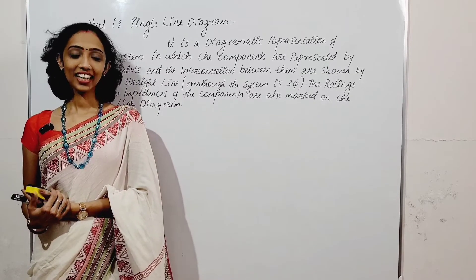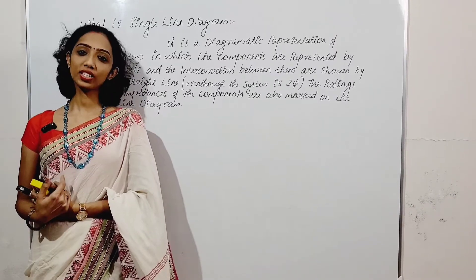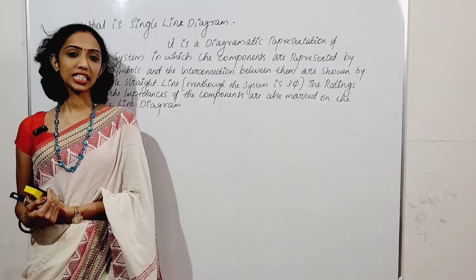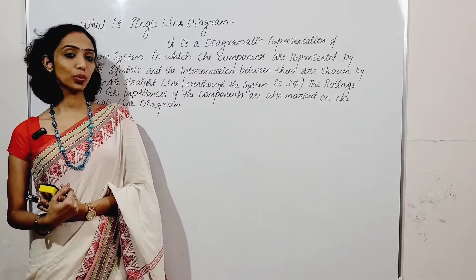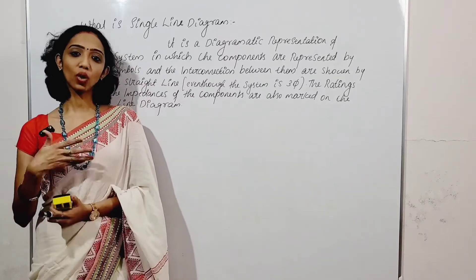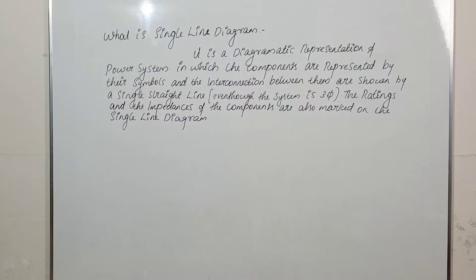Hi everyone! We are going to define a single line diagram and per unit reactance for the next numerical. I have already defined a single line diagram. What are the advantages of the per unit system? What is the need of the per unit system? What is the single line diagram? Now let's go. A single line diagram is simply the diagrammatic representation of a power system in which the components are represented by their symbols, and the interconnections between them are shown by a single straight line.